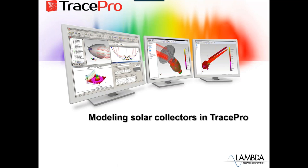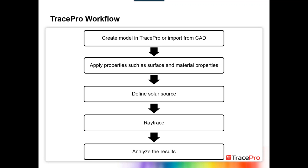Let's talk now about modeling solar collectors in TracePro. I created a sample workflow. First, we'd create the model either in TracePro or import it from CAD — this could be an SAT, STEP, or IGES file. You could also make the system in the interactive optimizer in TracePro. Then we'd apply properties such as surface and material properties, define a light source — we need the sun in the model — run a ray trace, and analyze the results. It's a very similar process to any other ray trace in TracePro.